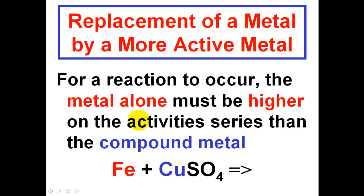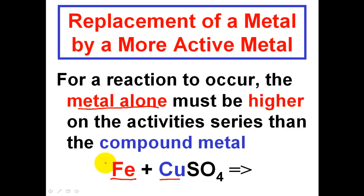The title here is the replacement of a metal by a more active metal. For a single replacement reaction to occur, the metal that is alone must be higher on the activity series than the metal in the compound. So the metal alone must be higher than the metal in the compound. In order for iron to bump out copper and trade places with it, iron — the element alone — must be higher on the activity series.